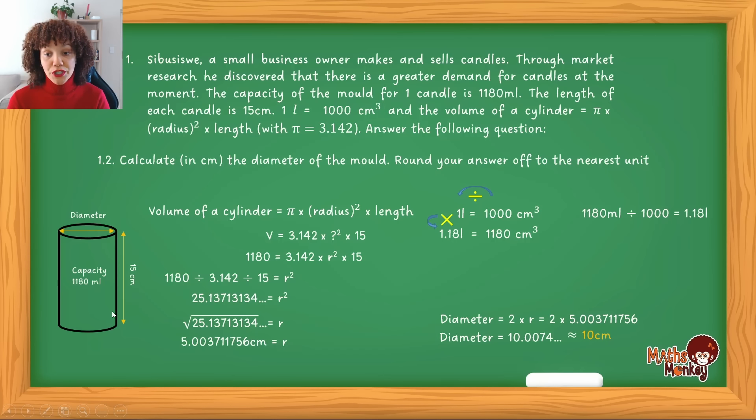So ideally in this question, we had to first work from the capacity and we worked back to try and find the radius. And then the radius we had to multiply by two to find the diameter.